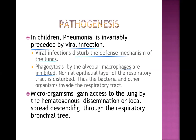Microorganisms gain access to the lung by hematogenous dissemination or local spread, descending through the respiratory bronchial tree from the upper airway distally toward the lung. They may also reach the lung through blood via hematogenous dissemination from other infective sources in the body such as skin infection, abscess, urinary tract infection, pyelonephritis, osteomyelitis, or GI infection.